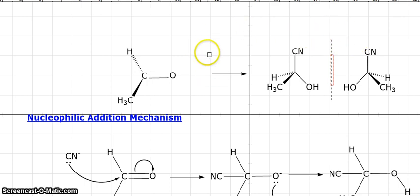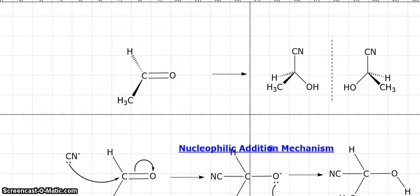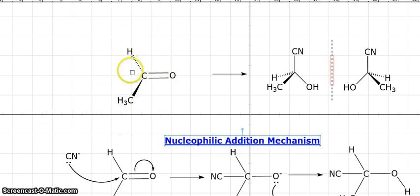One way to think about it is to look at our starting aldehyde here. So our starting aldehyde here, we've got the methyl group pointing out towards us, the hydrogen is pointing away from us. Now it's quite difficult to visualize that the hydrogen is actually going away into the screen.